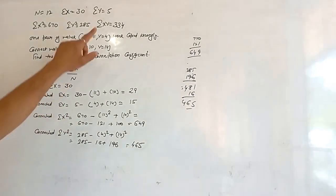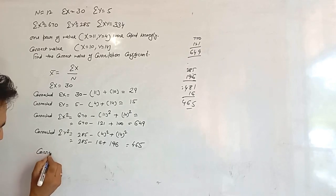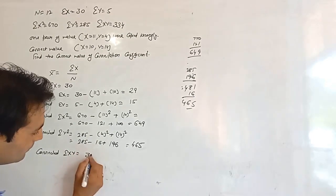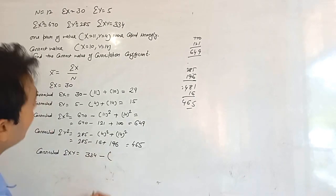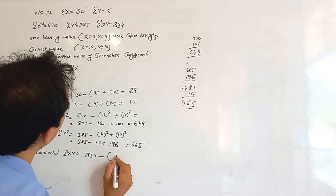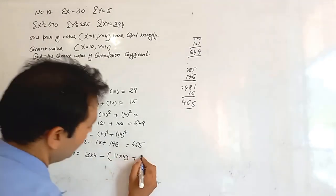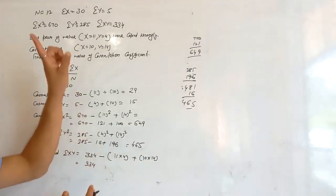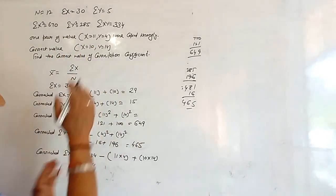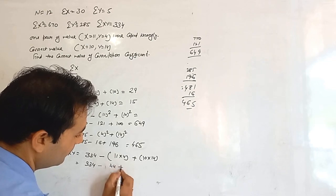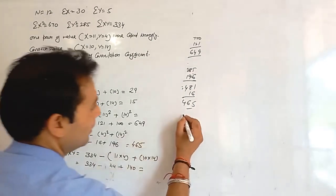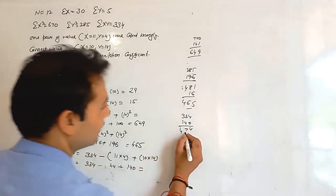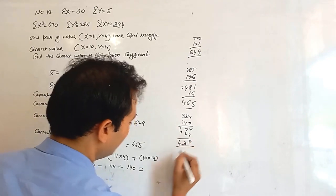Now we calculate the corrected summation xy: 334 minus the incorrect value (11 into 4 = 44) plus the correct value (10 into 40 = 400). That gives 334 minus 44 plus 400, which equals 690.